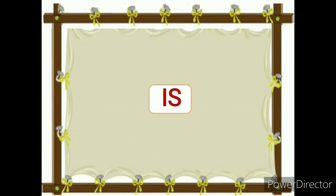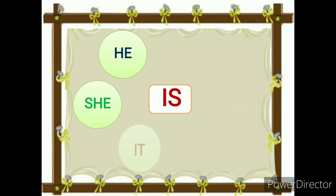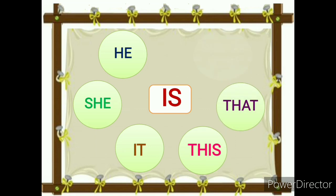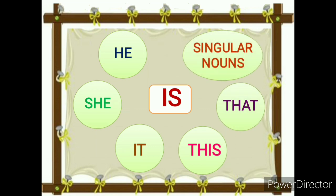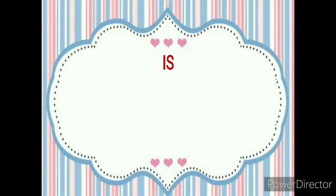First, we will start with the verb 'is'. The verb 'is' is used with he, she, it, this, that, and all singular noun words. Let's see the use of the verb 'is' in some sentences.